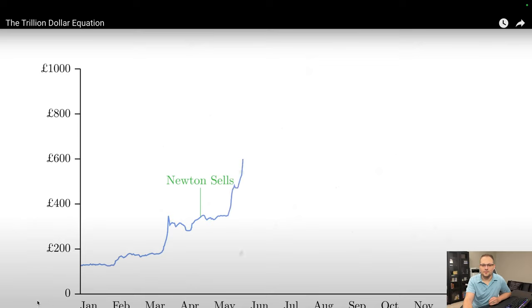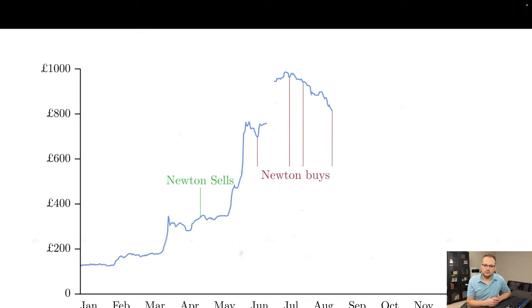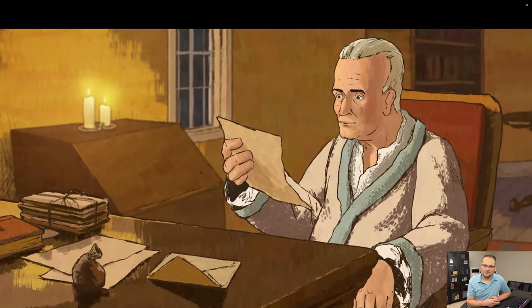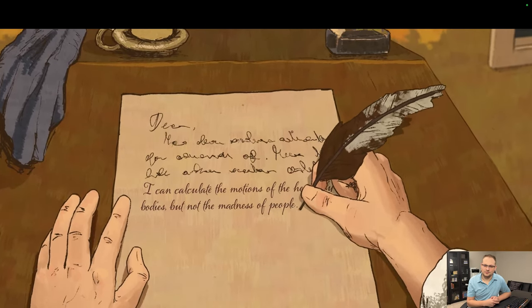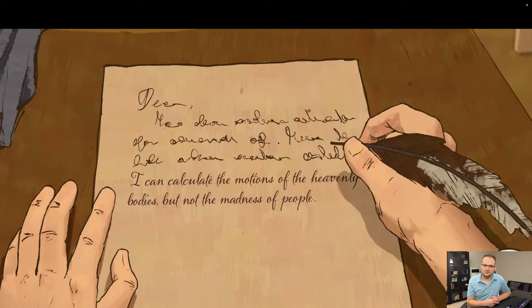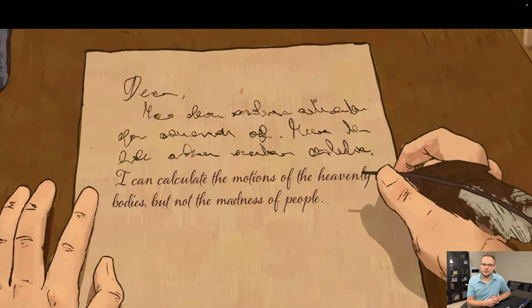But the stock price kept going up. And by June, Newton bought back in. And he kept buying shares even as the price peaked. When the price started to fall, Newton didn't sell. He bought more shares, thinking he was buying the dip. But there was no rebound. And ultimately, he lost around a third of his wealth. When asked why he didn't see it coming, Newton responded, I can calculate the motions of the heavenly bodies, but not the madness of people. Yeah, that's true. So what did Simons get right that Newton got wrong?